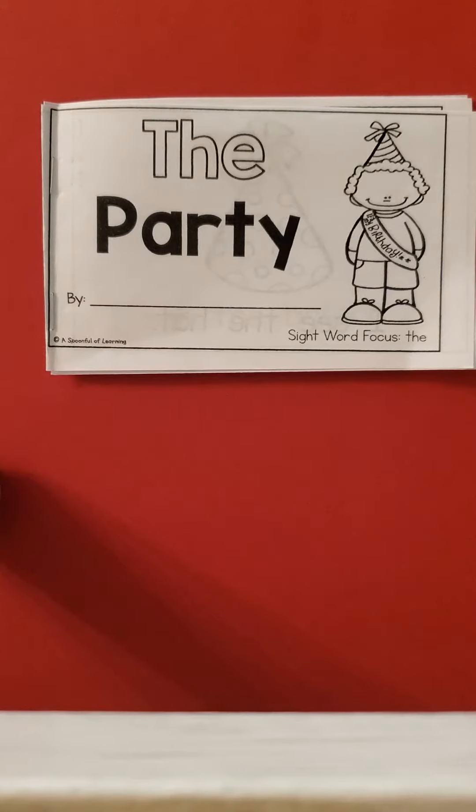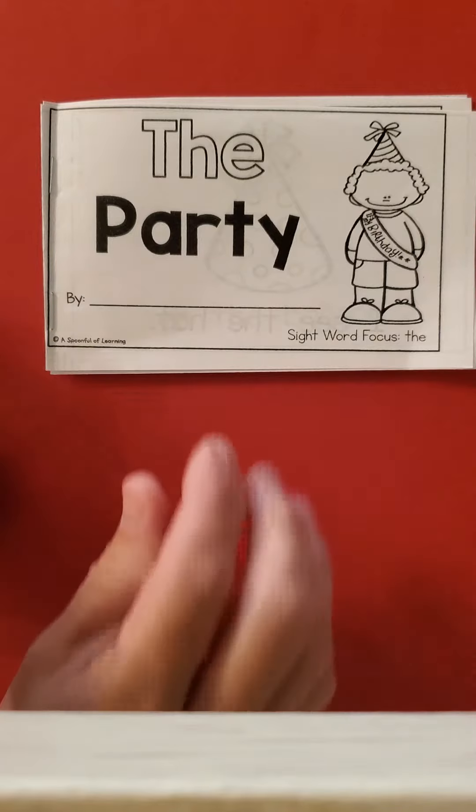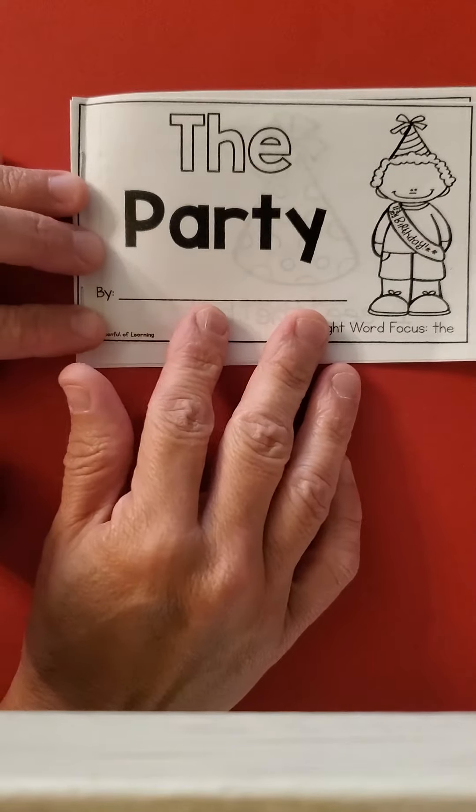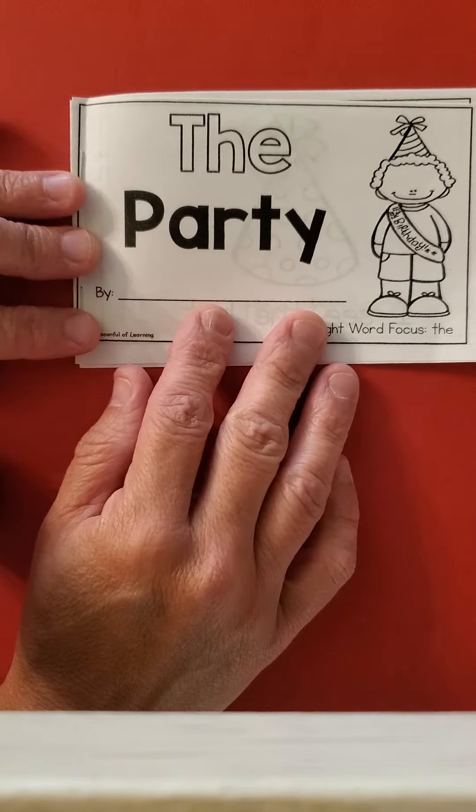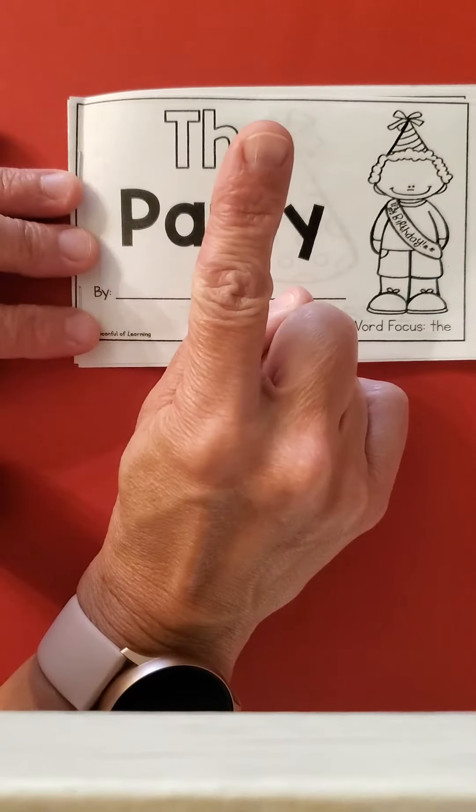Okay students, take out your book, The Party. We're going to reread this and this time we'll read it more fluently. Pause this video if you need to get your book. Here we go. Reading together. Tracking finger.